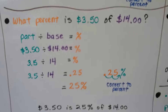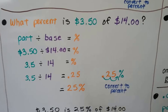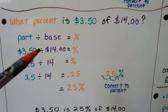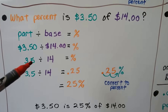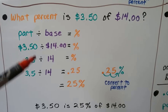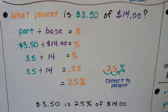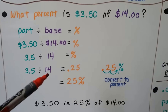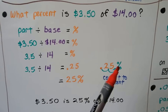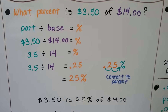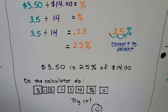What percent is $3.50 of $14? We do part divided by base to get the rate. We do $3.50 divided by $14. We can drop the dollar signs and just do 3.5 divided by 14, since the trailing zero isn't necessary. That gives us 0.25. We convert it to a percent — getting rid of the decimal point and putting on a percentage sign — and we have 25 percent. So $3.50 is 25 percent of $14.